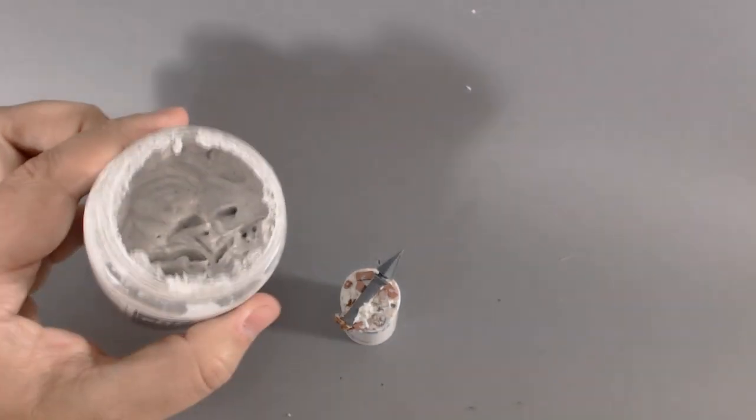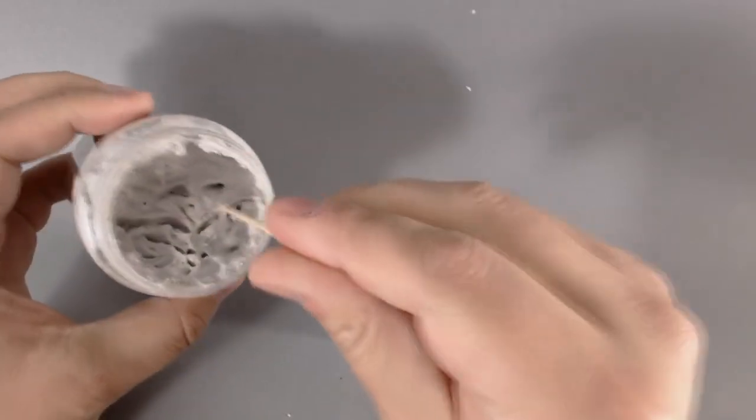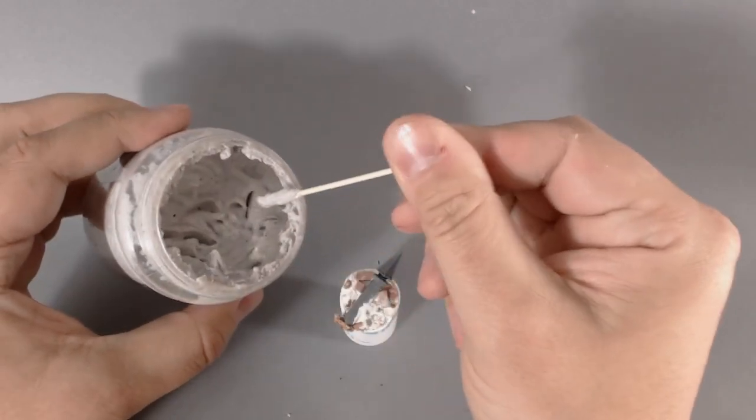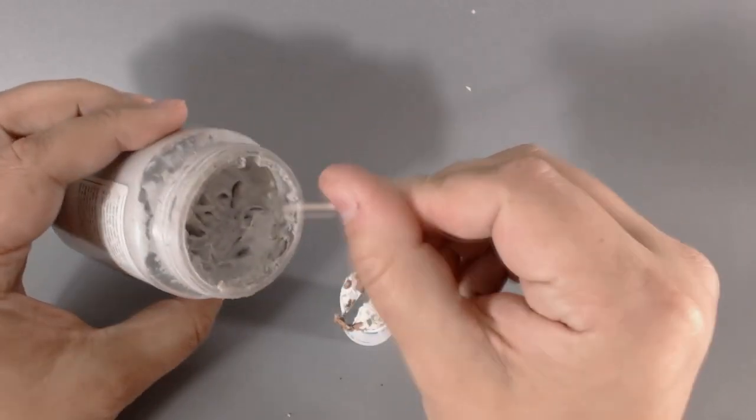So that's looking pretty good now, so we'll move on to the next stage. And for the next stage, we're going to use some Vallejo gray pumice. And this is an acrylic resin with ground up pumice in it.